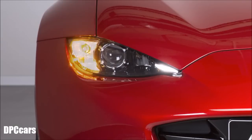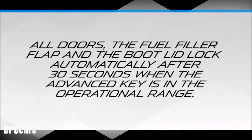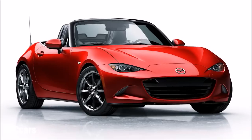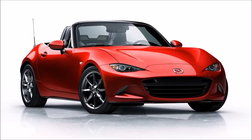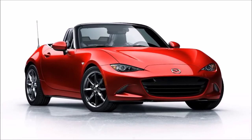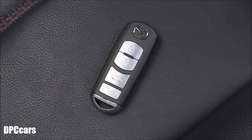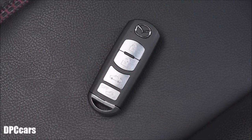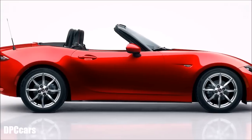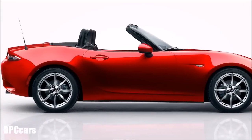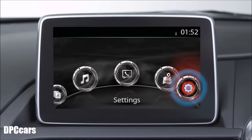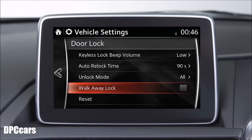Also, the hazard warning lights flash once. If the driver is in the operational range, all doors, the fuel filler flap and boot lid are locked automatically after about 30 seconds. If you are out of the operational range before the doors, fuel filler flap and boot lid are completely closed, or another key is left in the vehicle, the auto-lock function will not work. You hear one beep when all doors and the boot lid are closed. The auto-lock function of your keyless entry can be turned on or off in the personalisation settings.